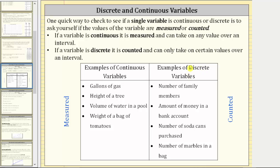For the examples of discrete variables, we have number of family members, amount of money in a bank account, number of soda cans purchased, and number of marbles in a bag. All of these are counted, which is the reason why they are discrete variables. Also notice how they can only take on certain values over a particular interval. For example, the number of family members, number of soda cans, and number of marbles can only be whole numbers, while the amount of money in a bank account can only be dollars and cents. This is another reason why these are discrete variables.